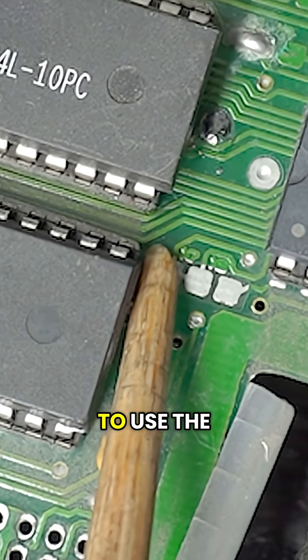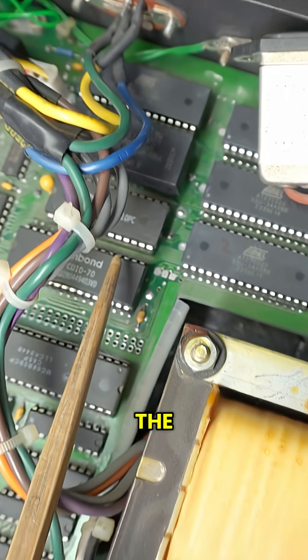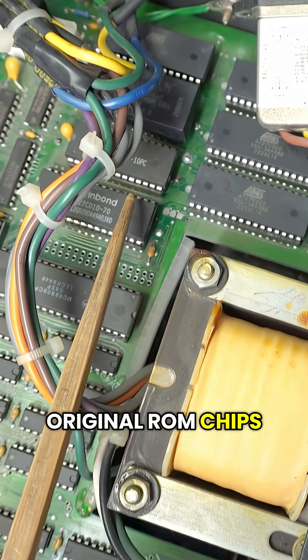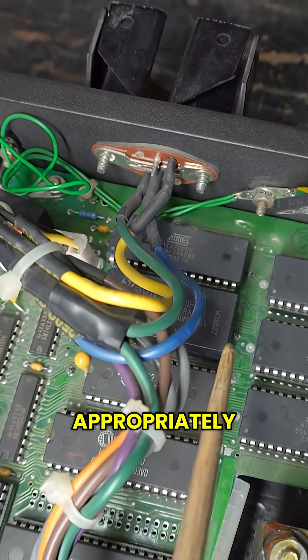So in order to access the upper addresses of the original ROM chips, EPROMs, we have to set the jumpers appropriately.